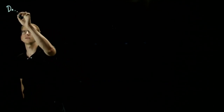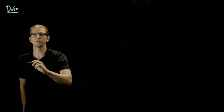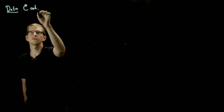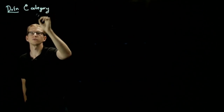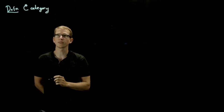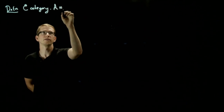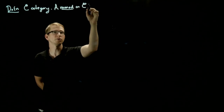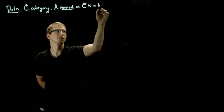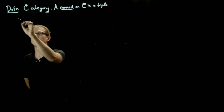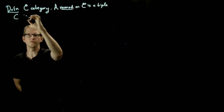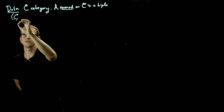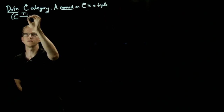So first we'll give the definition — just recall the definition of a monad. So C is a category; we'll fix our category C. And a monad on C is a triple, and it consists of a bunch of things, the first of which is a functor from C to itself — let's call it T.